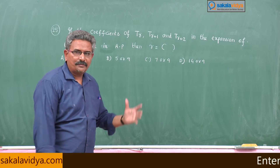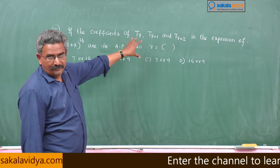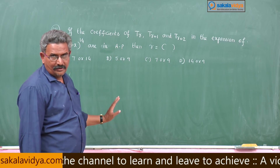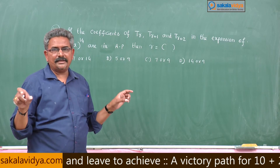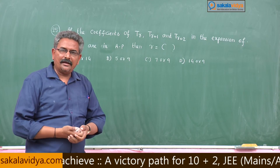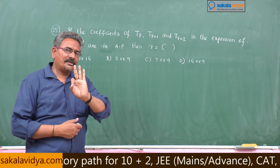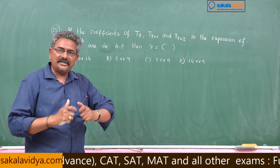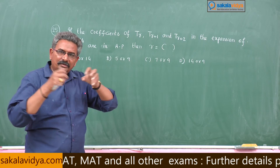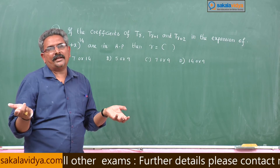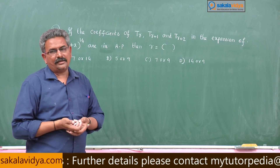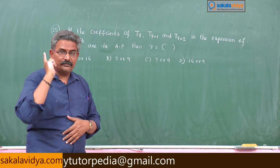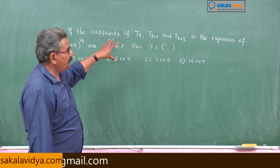To solve this, write the rth, (r+1)th, and (r+2)th terms and separate their coefficients. Since three terms A, B, C are in AP, the condition is 2B = A + C. Applying this gives a quadratic equation in r, which is lengthy — but there is a shortcut.